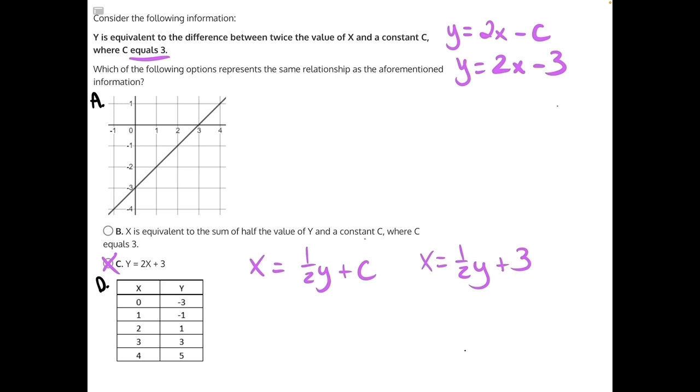Now we just need to rearrange it so that y is isolated, so that we can properly compare. Using opposite operations, we'll subtract 3 from both sides. These will cancel, giving us x minus 3 is equal to 1 half y. And 1 half y can also be rewritten as y divided by 2. They're both the same thing, and that makes it a bit easier to visualize what we have to do here. y is being divided by 2, so we need to do the opposite and multiply both sides by 2.